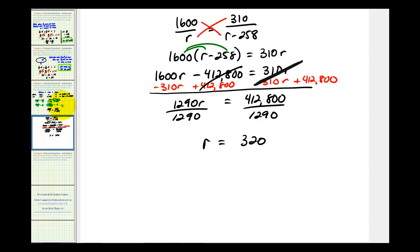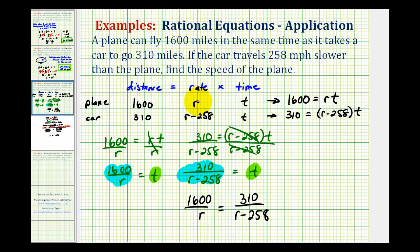So if we go back to our question, if r is equal to 320, that means the plane is traveling 320 miles per hour.